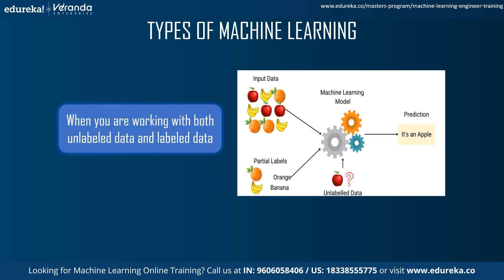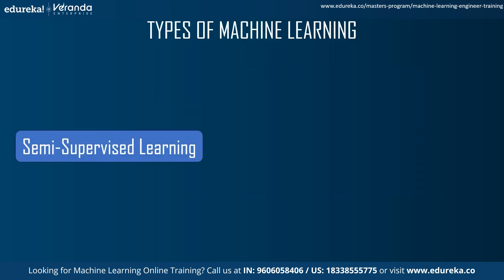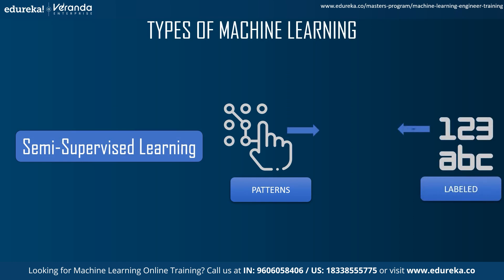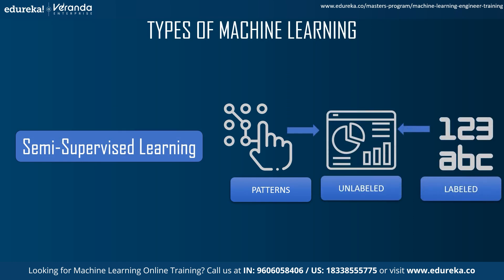The third type is semi-supervised learning. In semi-supervised learning, the algorithm uses both unsupervised and supervised learning in a combined form to give you the optimal result. The algorithm finds patterns from data sets that are both labeled and unlabeled.